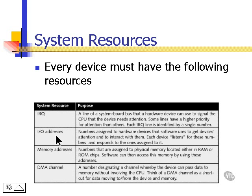Each device will listen on its I/O address. Hardware devices also need memory addresses. Most hardware comes with its own device drivers, and these will need to be loaded into memory in order for the device to be able to function. And then some devices use what's called a DMA channel — a direct memory access channel — which gives that device access to RAM without interrupting the processor.